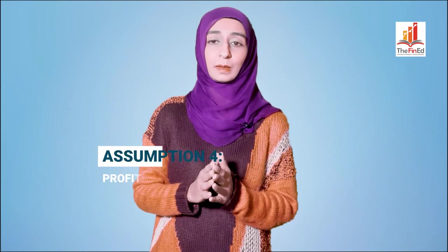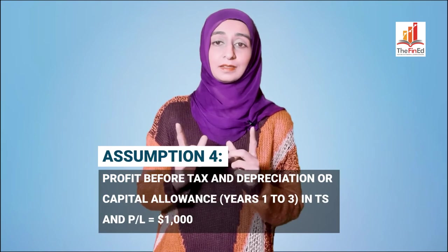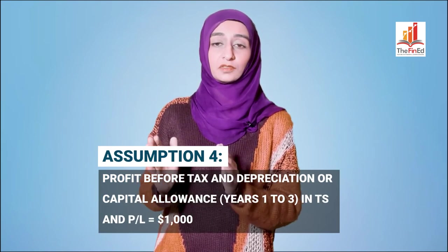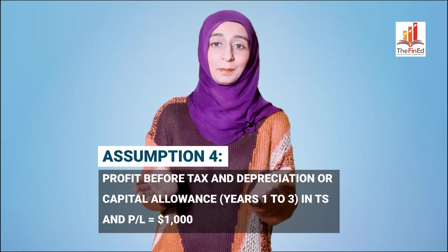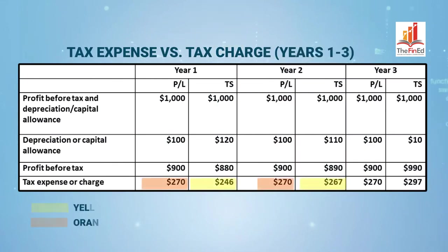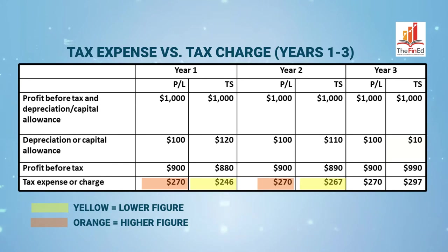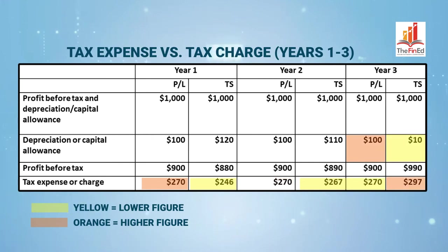Now why a liability? Let's extend this example all the way to the end of year three, with the assumption that the profit before tax and depreciation or capital allowance is equal to $1,000 in each of the three years. A lower tax charge compared to the tax expense in years one and two is only a temporary benefit, which will turn into a future tax liability as the capital allowance falls below the depreciation charge — exactly what's happening in year three — leading to higher taxable profits and naturally a higher tax charge.